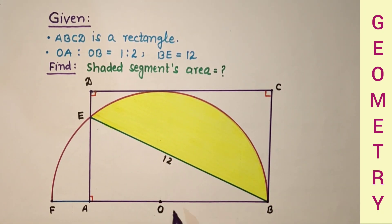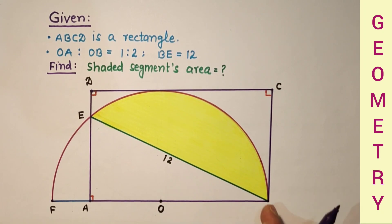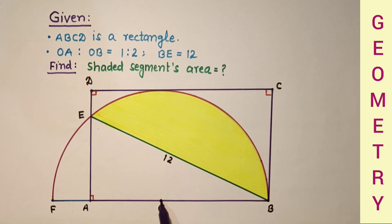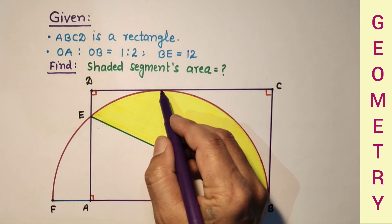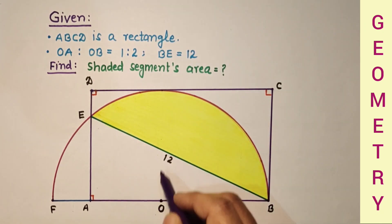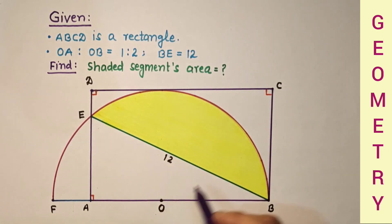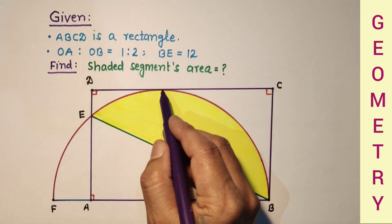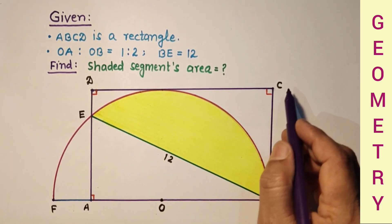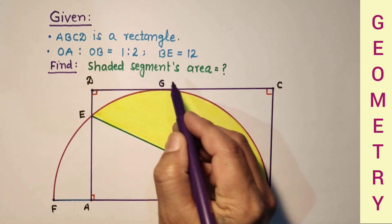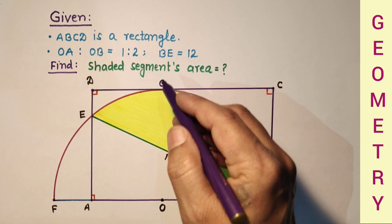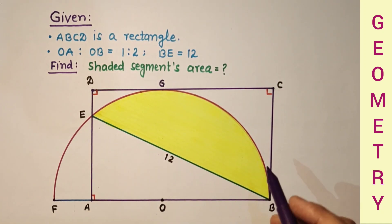To do that, OB is the radius of the semicircle, so assume this is R. If we join the center to the point of contact, this will be perpendicular and will again be the radius of the semicircle, equal to BC. So OB, BC, CG, and GO are all equal, and therefore this forms a square.